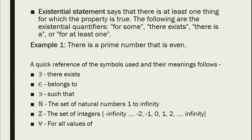Next, we have the existential statement, which says that there is at least one thing for which a property is true. The existential quantifiers include: for some, there exists, there is a, or for at least one. Example: 'There is a prime number that is even.' The thing for which the property is true is the number 2, which is even and prime.